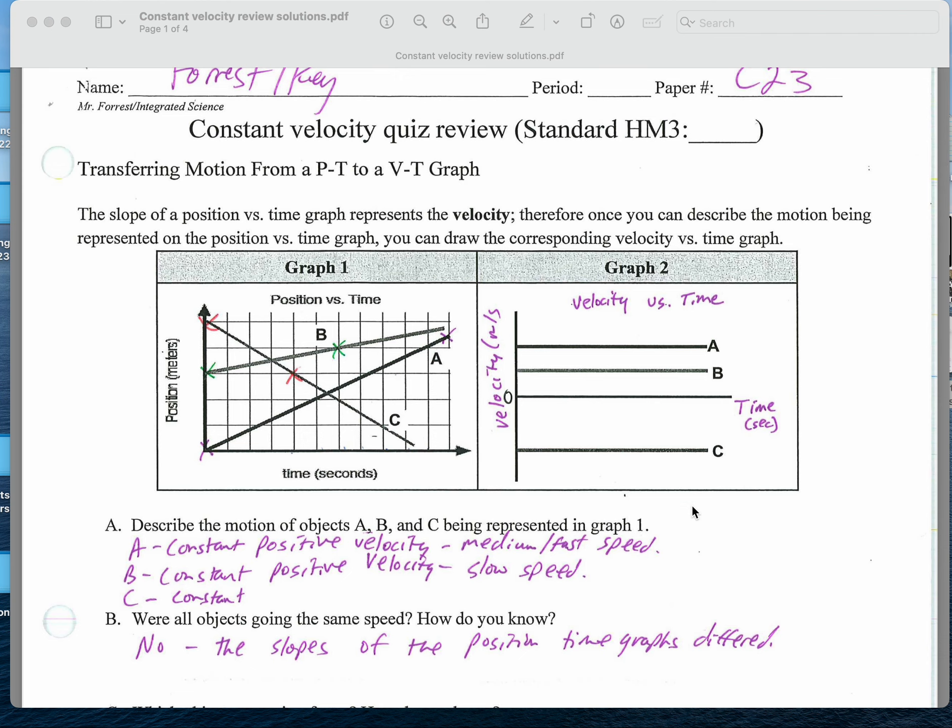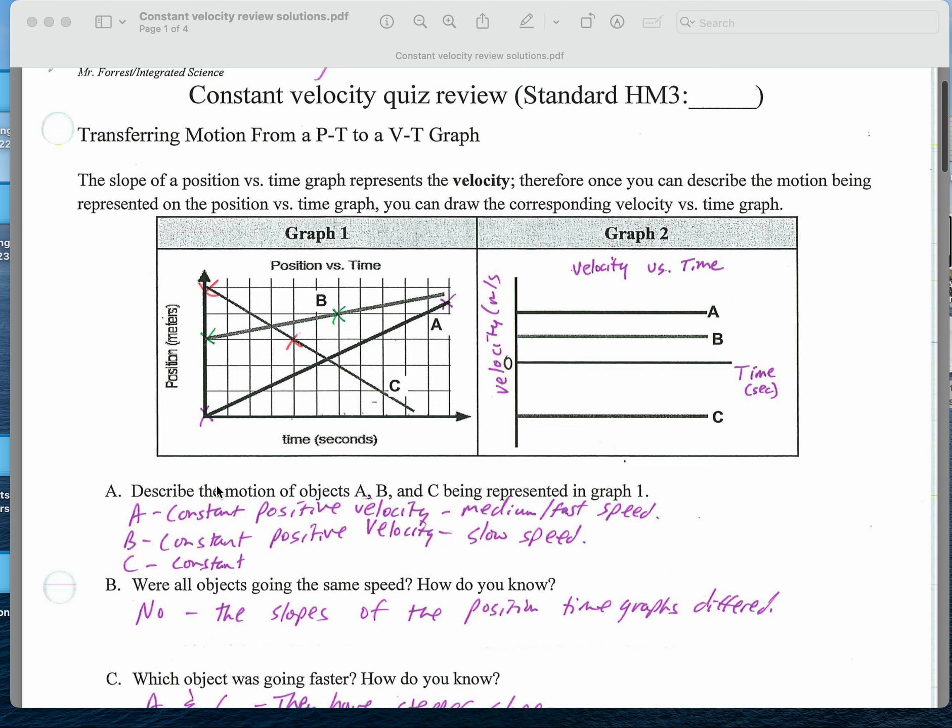Describing the motion of objects A, B, and C, these are all going a constant velocity because they all have a constant slope on the position graph. A has a constant positive velocity because it's got a constant positive slope. B has a constant positive velocity as a constant positive slope. C has a constant negative velocity because it has a constant negative slope as well.